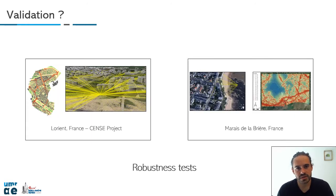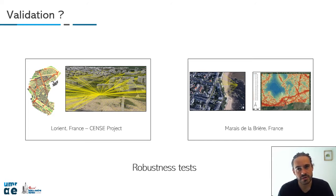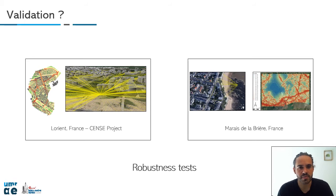We also did robustness testing with large input databases, like buildings for example. We know that when we have large databases, it's more probable that you have some mistakes in the database. We wanted to be sure that noise modeling can still compute a noise map even if you have a small error in one part of your database.